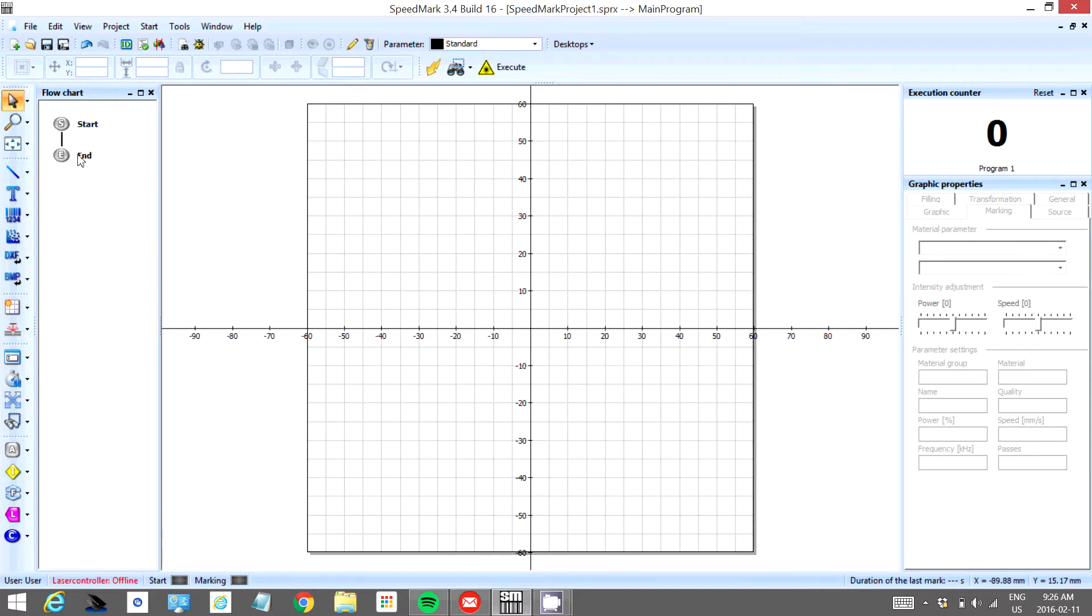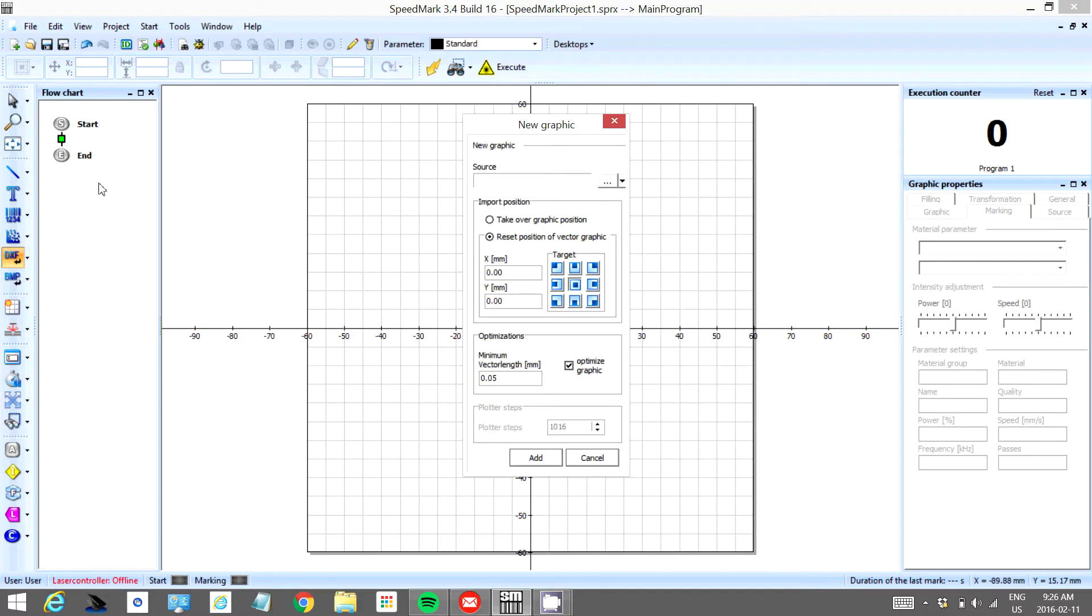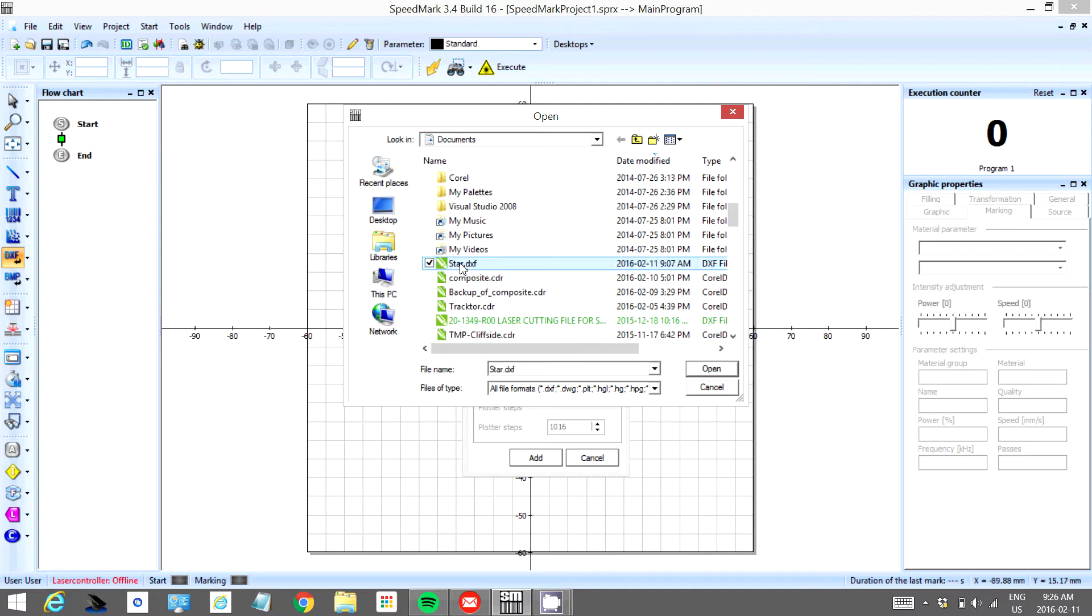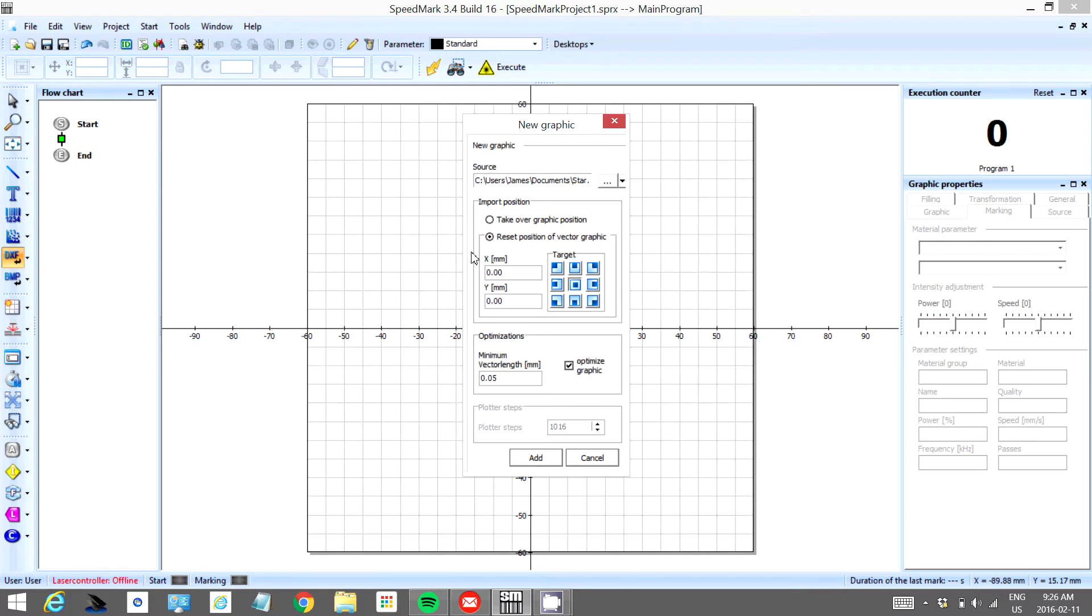So we're going to spice it up a little bit by including an object to actually cut. We're going to import an object and place it inside of our program. I'm going to look for that object called star.dxf and I'm going to add it.